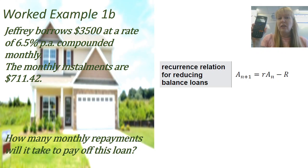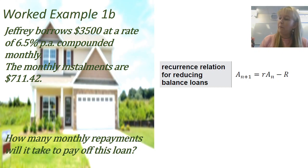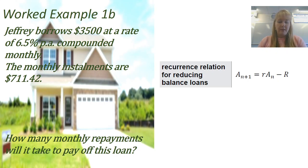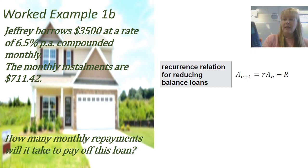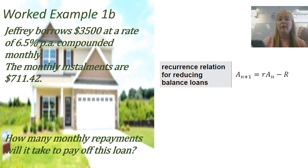On your calculator, type in the principal — $3,500 — and press the equals or execute button. Then multiply that by 1.00542, and subtract 711.42. That expression sits at the top of the screen. Now press equals: after one monthly payment, $2,800 is owing.